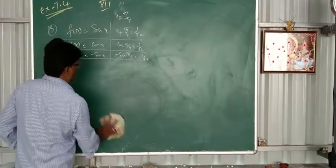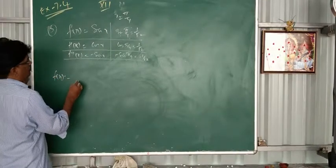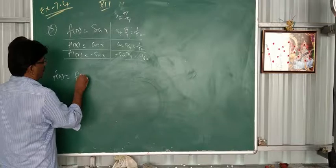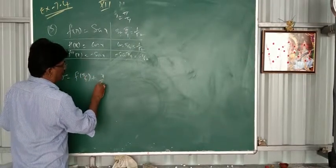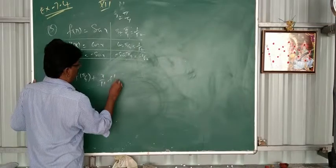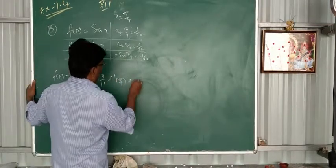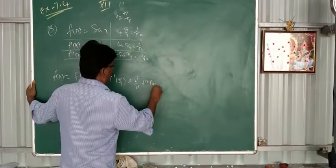Directly in the formula you can apply. So f of x equals first f of pi by 4, plus x by 1 factorial, f dash of pi by 4, plus x squared by 2 factorial, f double dash of pi by 4.